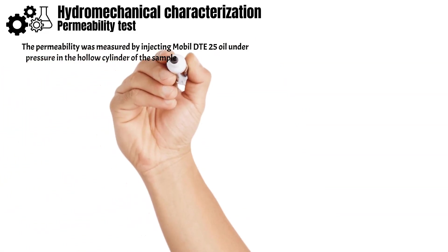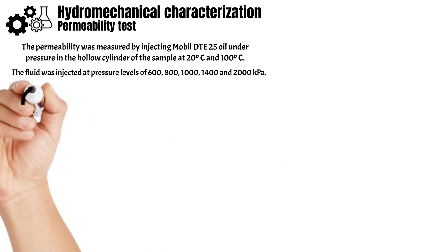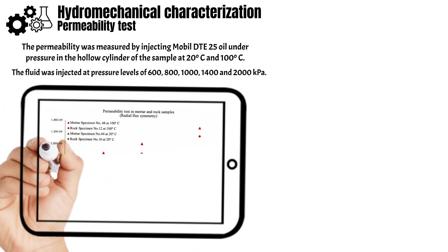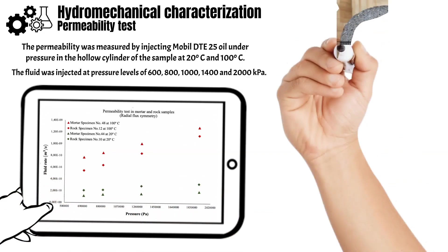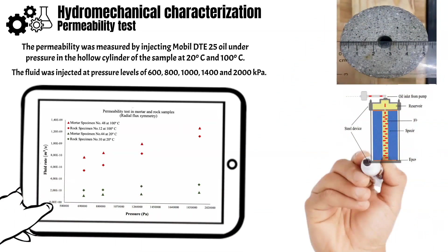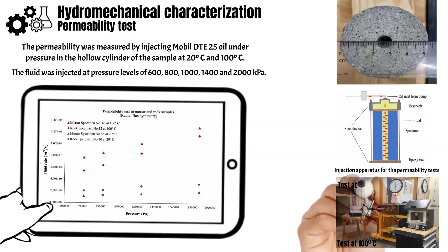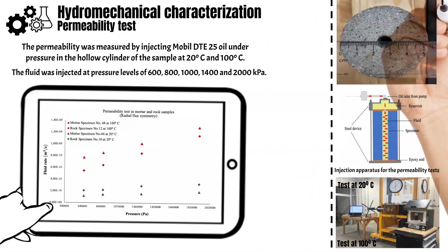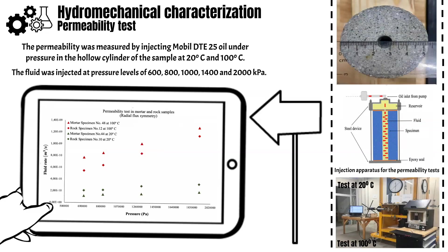The permeability was made by injecting oil under pressure in the hollow cylinder. In this graph, we can see the evolution of injected fluid flow rate as a function of the injection pressure in synthetic and rock samples. The fluid flow rate was estimated by the COMSOL software.